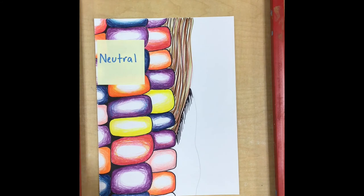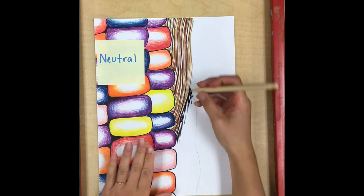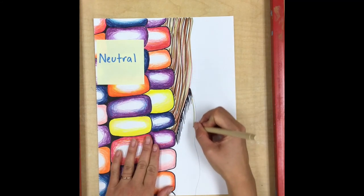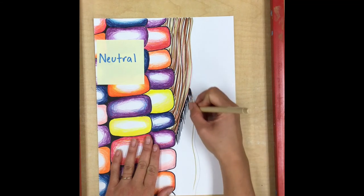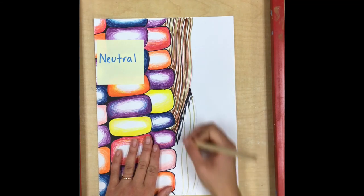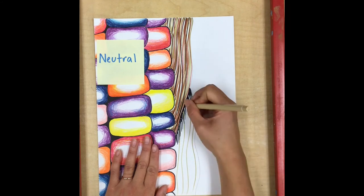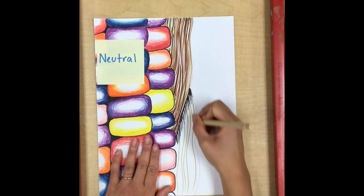And then I'm going to take my brown colors and do the exact same thing as I did before, filling it in with lines that are all going in the same direction of that contour.